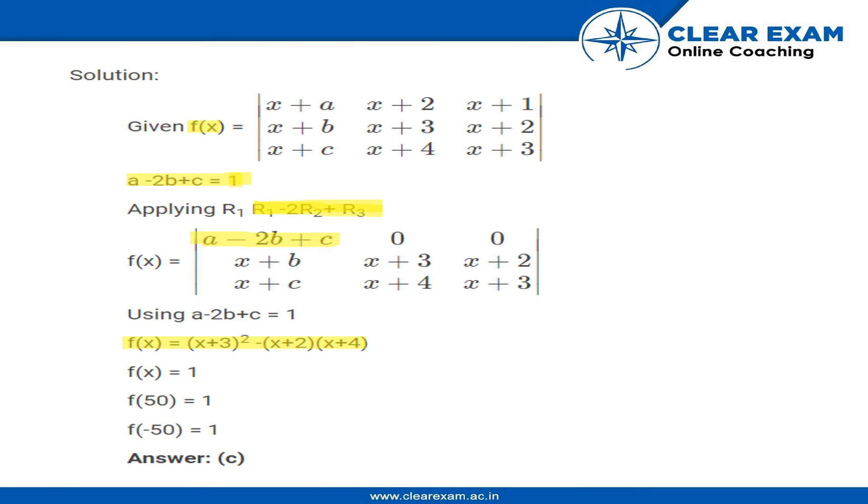This gives us a final answer of 1, so this implies f(x) is a constant function. Its result is a constant, so whatever the value of x might be, the answer will still be 1 for this function.